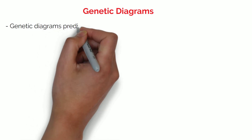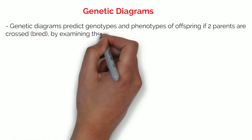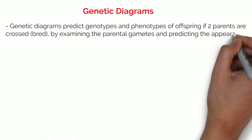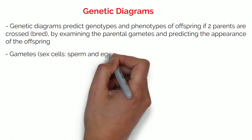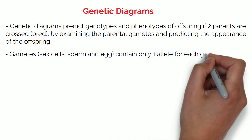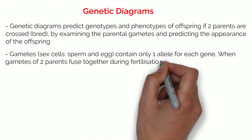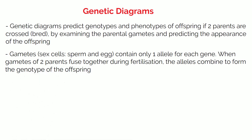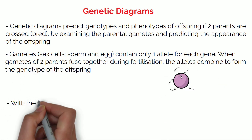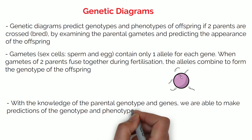Genetic diagrams predict genotypes and phenotypes of offspring if two parents are crossed or bred, by examining the parental gametes and predicting the appearance in the offspring. Gametes, also known as sex cells — the sperm and the egg — contain only one allele for each gene. When gametes of two parents fuse together during fertilization, the alleles combine to form the genotype of the offspring. With the knowledge of the parental genotype and genes, we are able to make predictions of the genotype and phenotype of the potential offspring.